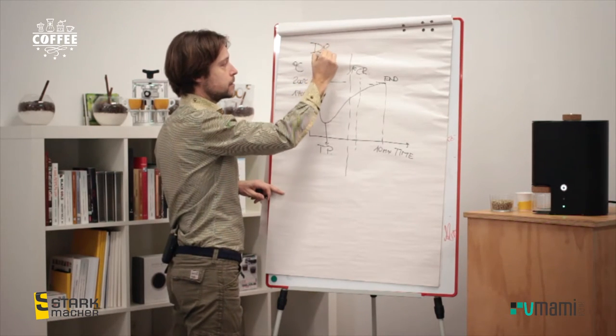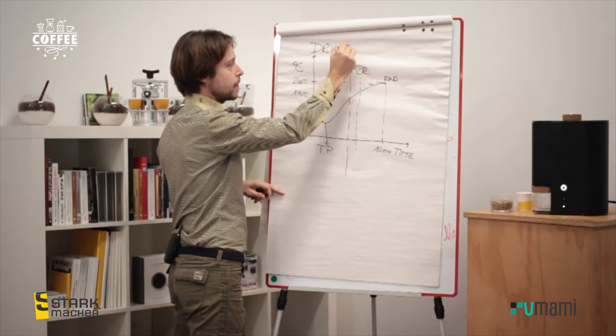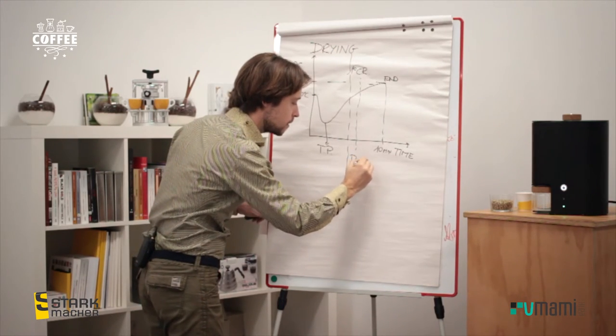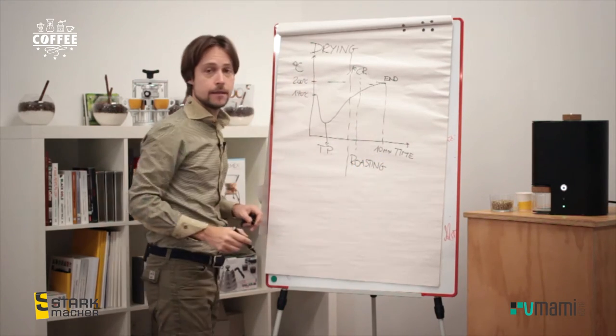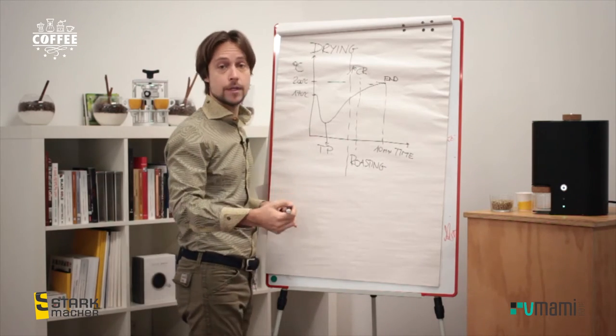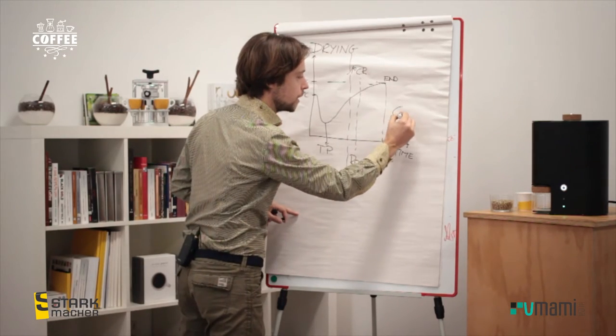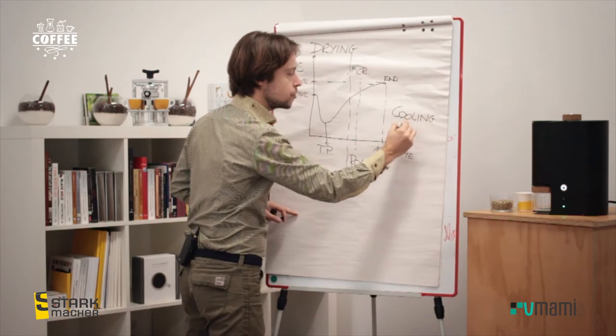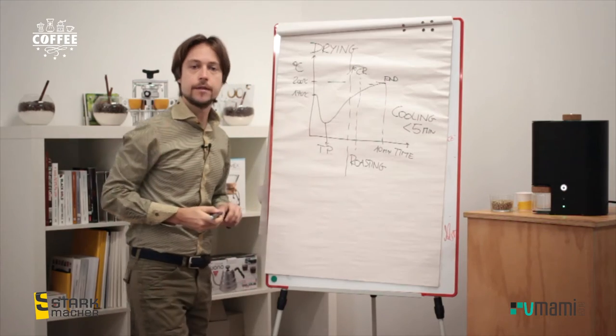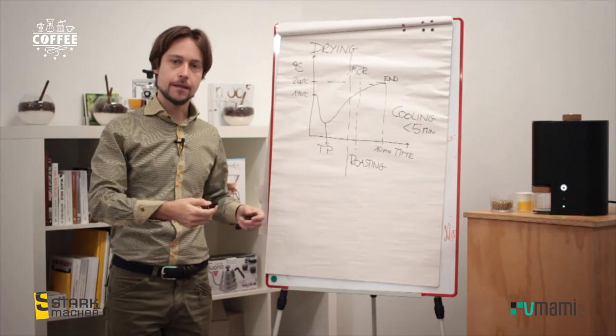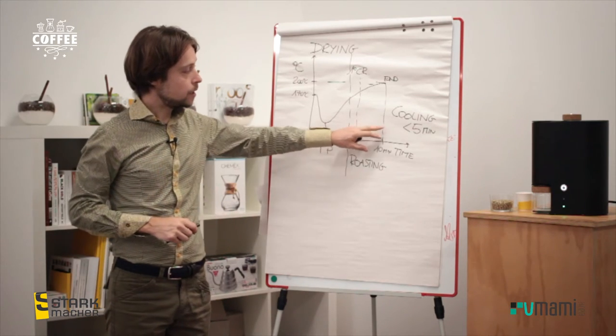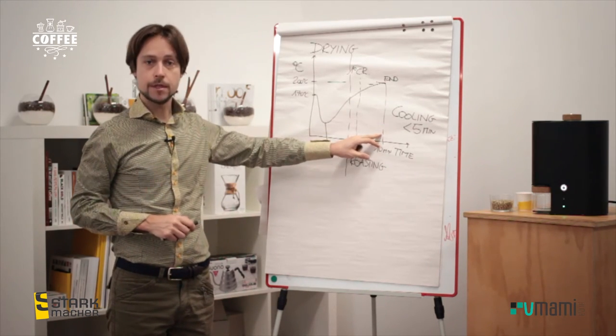And also briefly, we can say we can divide the roasting process in three main phases. So the first one is drying, then I have the proper roasting phase, and at the end, I have beans at high temperature. I have to cool it down, so it means cooling. That is important. It should be less than five minutes to preserve the quality of the bean, to not have any baked effect into the cup, and to stop the roasting process at the right roasting degree.